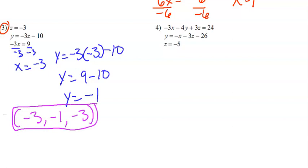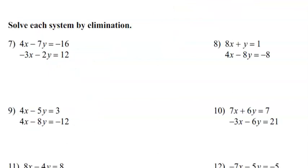There are also answers in the back of your packet if you want to check those. I do want to see some steps here, even if you use a calculator. Write down how you would set up your matrix, or you could do this by substitution. I would recommend doing these ones with substitution, since if you were to set these up as matrices, you would have to move all the variables to one side in the correct order.